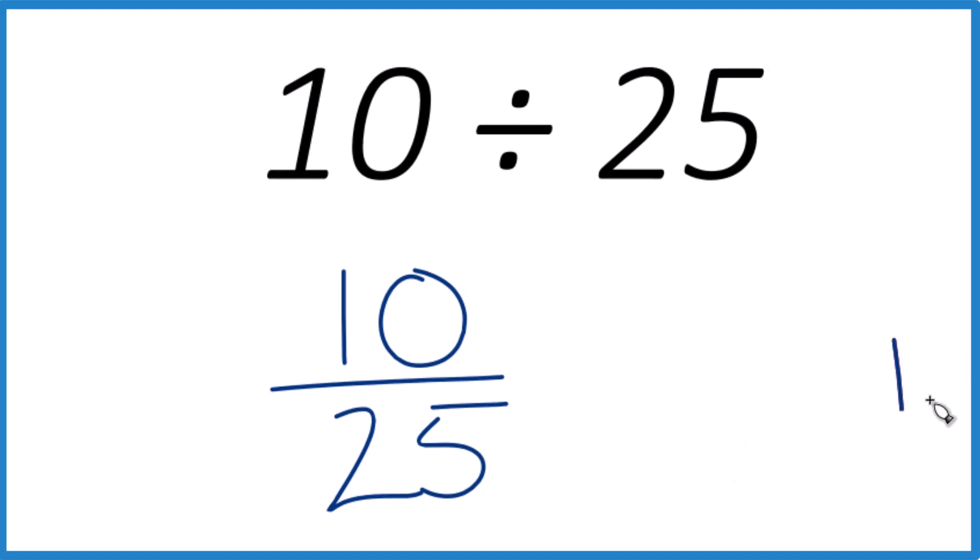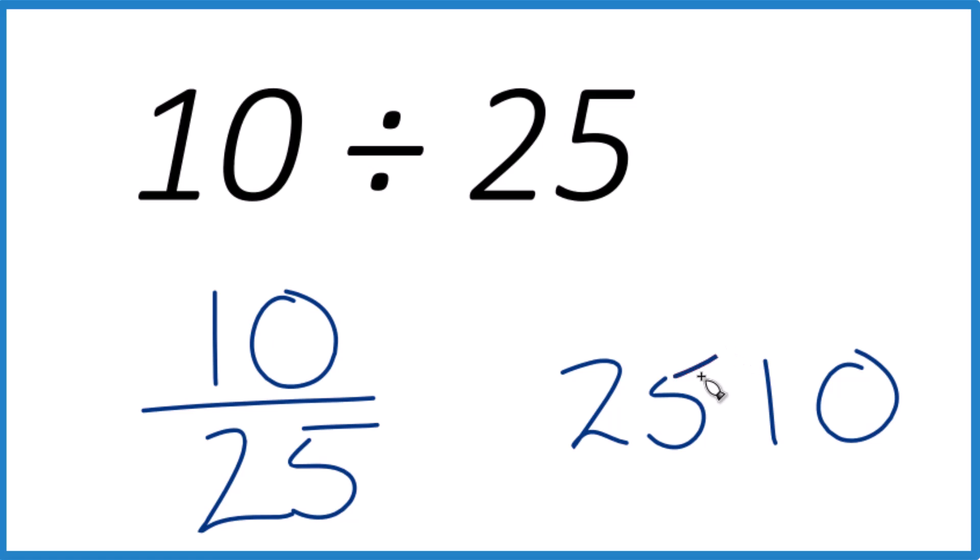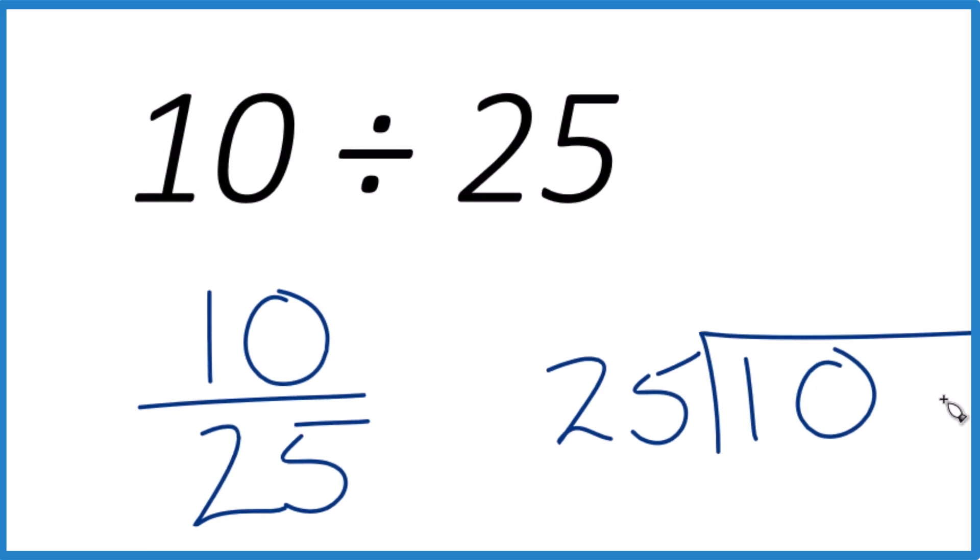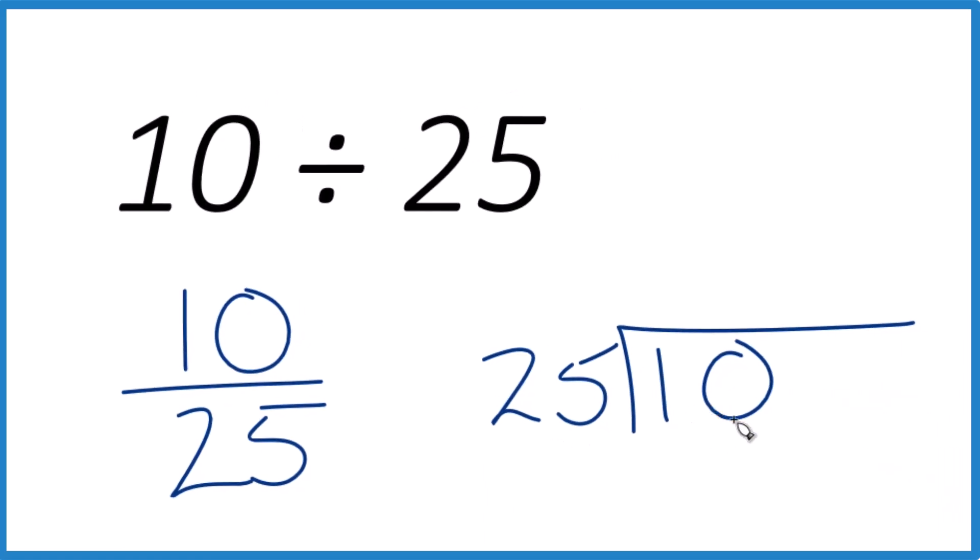So let's take our 10 right here, see how many times 25 goes into 10. So it doesn't go into 10, but what we can do is put a decimal point and a zero here. It's still 10, but if we put a decimal point up here, now we can treat this as 100.